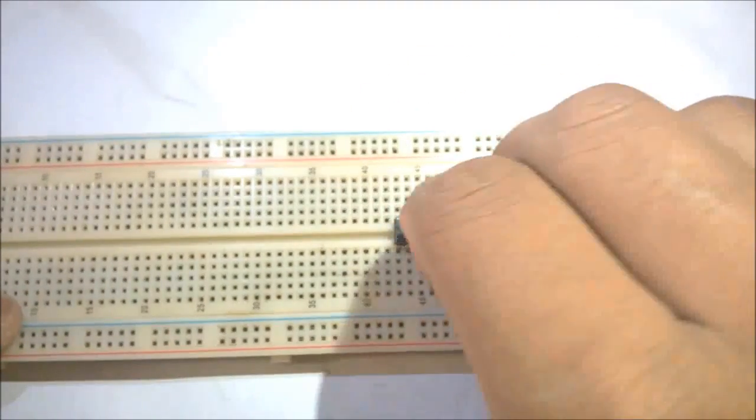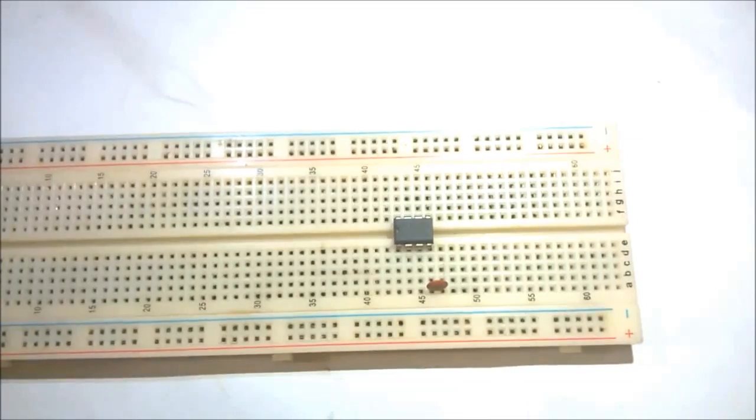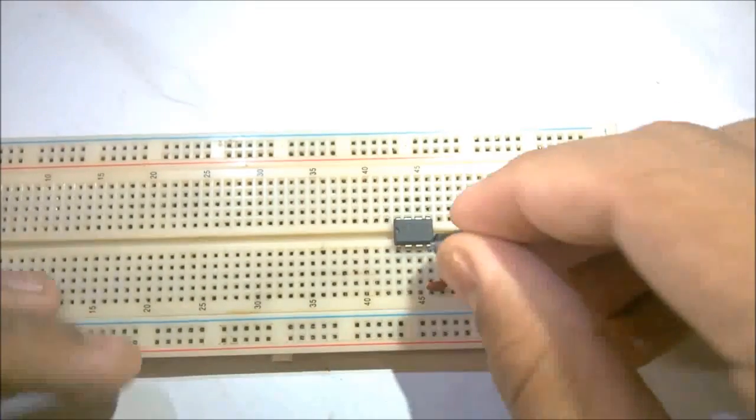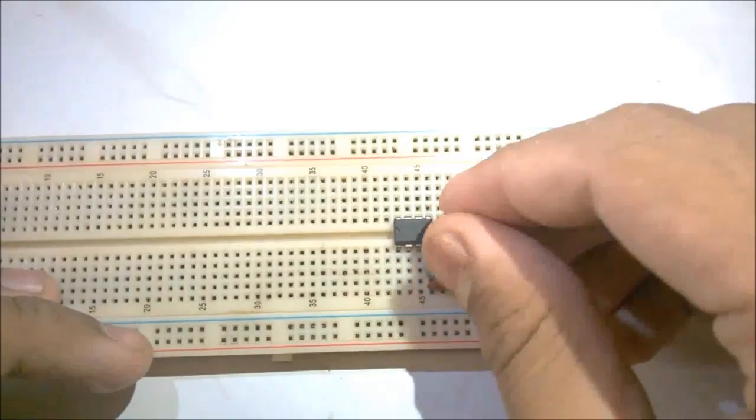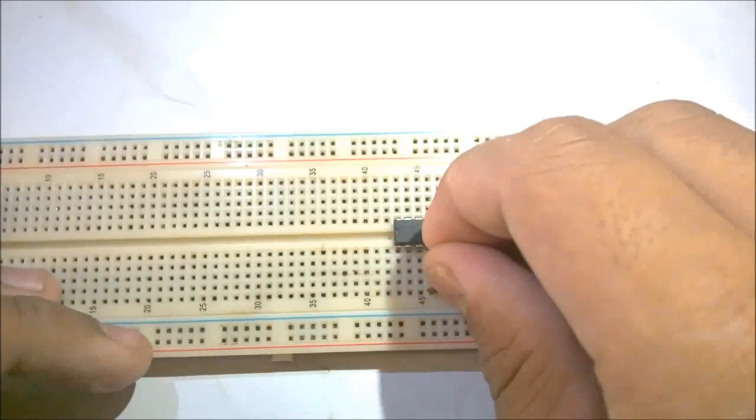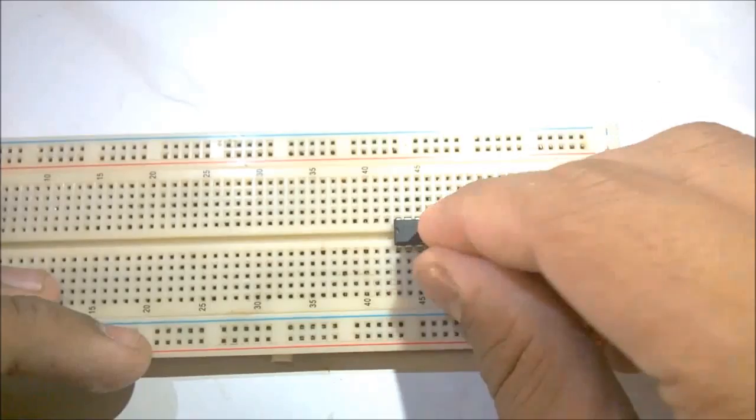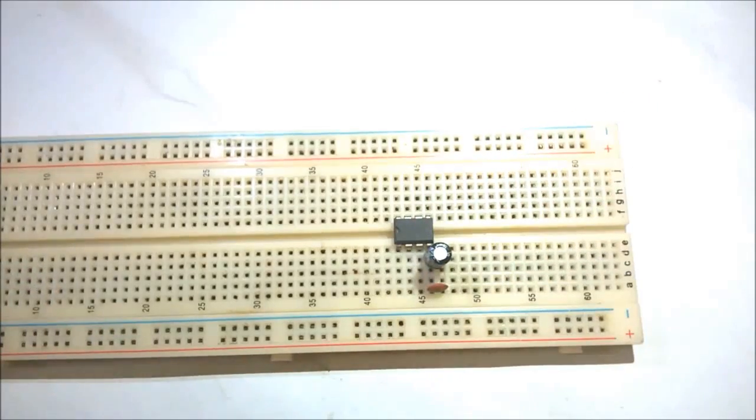Now mount the 0.1uF capacitor with pin 4 to positive. Now mount the 100uF capacitor from pin 4 to positive rail. It has polarity so be careful while mounting.